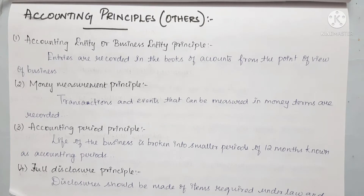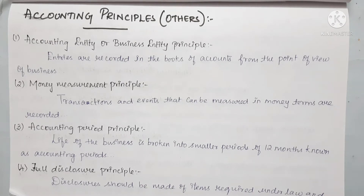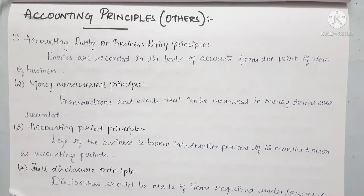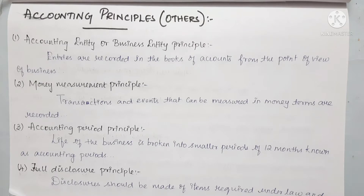Hi friends, welcome back to my channel Savvy Learner. We will talk about CBC syllabus 11th accountants, chapter 3. In the last video, we talked about a few theory topics — you will see that video link in the end card. In this video, we will talk about accounting principles step by step. There are 11 accounting principles in the book. We will see them one by one. If you subscribe to our channel, please click the bell icon.